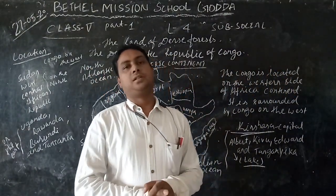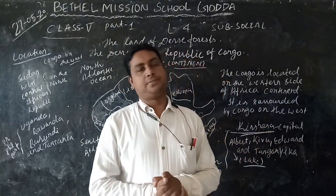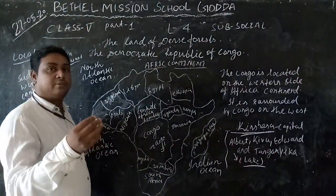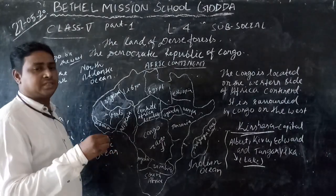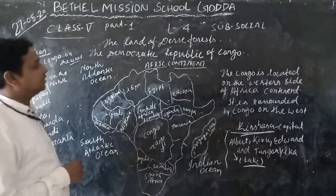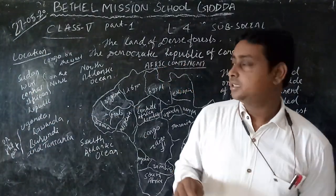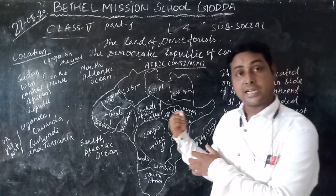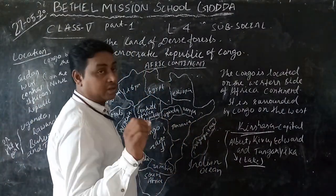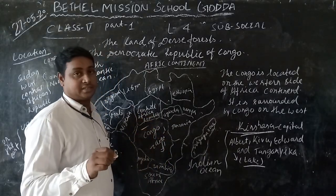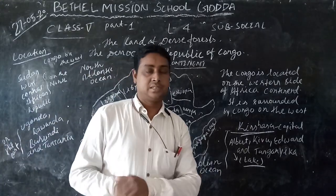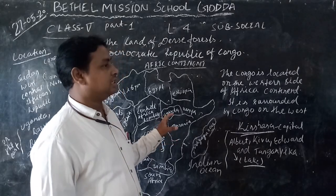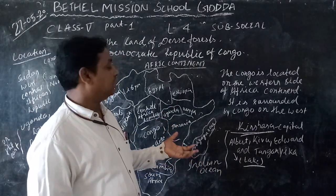Good morning students. Today I'm going to teach you Social Science for Standard Five. Today we will discuss 'The Land of the Forest' — the Democratic Republic of Congo. In this chapter we will discuss the climate, wildlife, vegetation, and industries of Congo, and also the river of Congo.